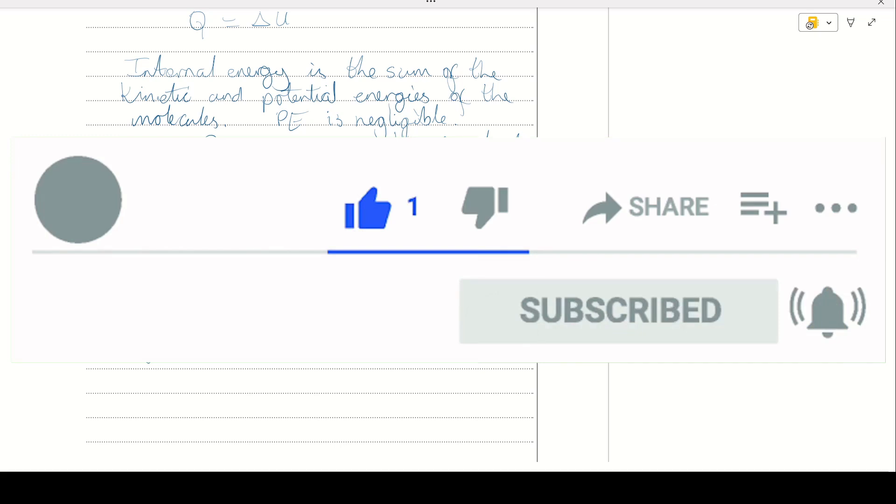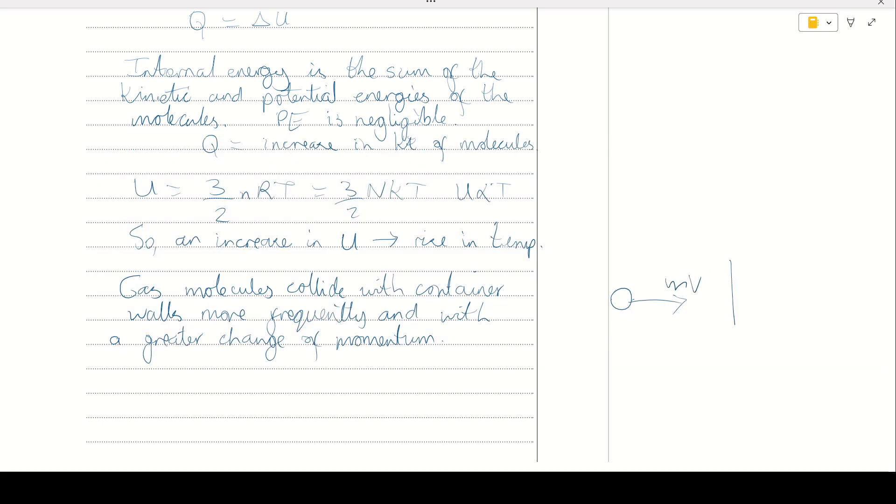So in simple terms, the gas molecule is going to head towards the wall with a momentum MV. It's going to bounce off the wall of the container. Remember that one of the assumptions of kinetic theory is that these collisions are elastic. So it's going to bounce off the wall with a momentum of minus MV. The change of momentum here would be technically minus 2MV. But basically, the point is that our gas molecule's momentum has changed in the collision. And if the gas molecule was moving faster because it has more kinetic energy, then this change of momentum will be bigger.